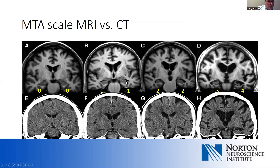A medial temporal lobe atrophy scale of one shows a bit more opening of the choroidal fissure and some loss of height of the hippocampal structures — on CT it's difficult to make anything out clearly. A score of two shows increasing loss. A score of three is more severe. And finally, a score of four shows quite severe hippocampal atrophy where there's very little tissue left — essentially just a shriveled hippocampus — with the corresponding CT findings.